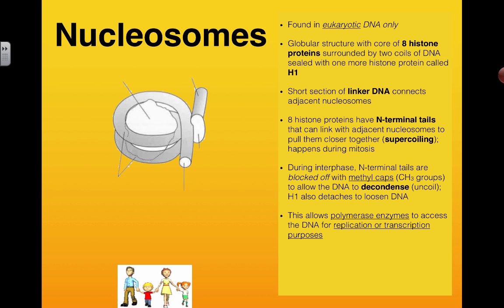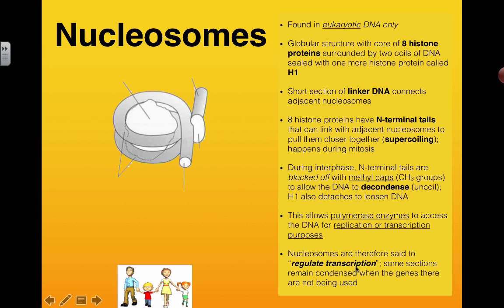So if it's actually loose and these little cap guys are blocking these N-terminal tails then they can't hold on to each other and that can allow polymerase enzymes in for replication or RNA polymerase enzymes in for transcription. Because this process can allow enzymes to get in here, we can say the following, the very last bullet point here, which is that nucleosomes are therefore said to regulate transcription. Some sections remain condensed when the genes there are not being used. So these methyl caps, if they're on then we can really spread out the nucleosomes and give access and then allow genes to get transcribed.